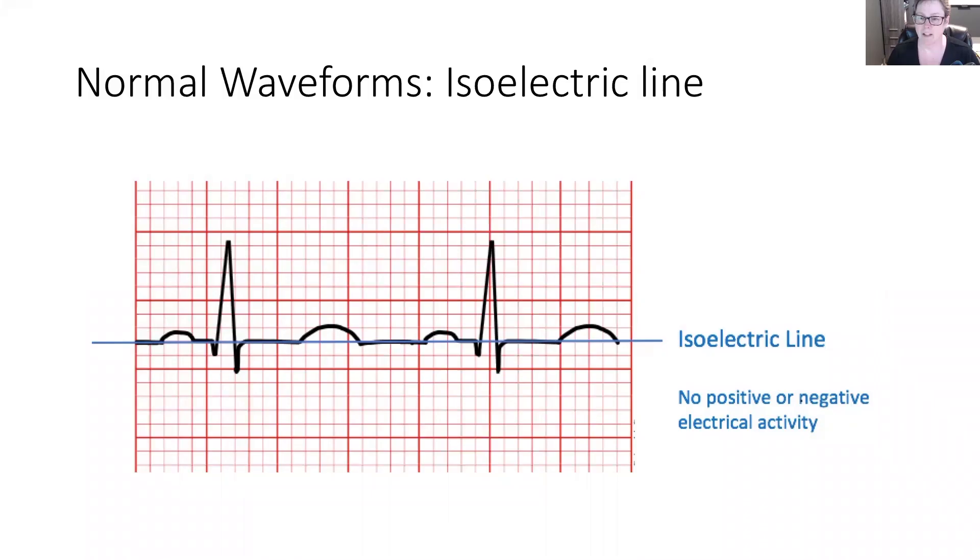In this module, we will be looking at the normal waveforms of an ECG tracing. The isoelectric line is where we're going to start.